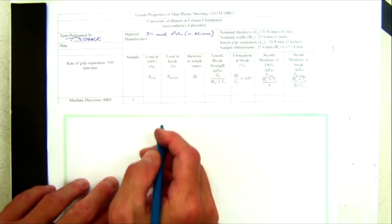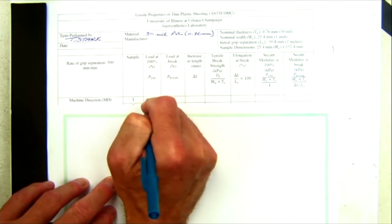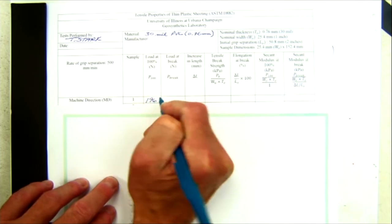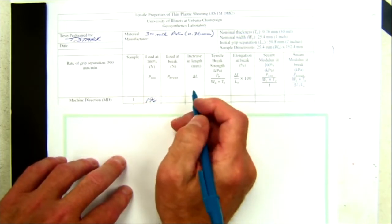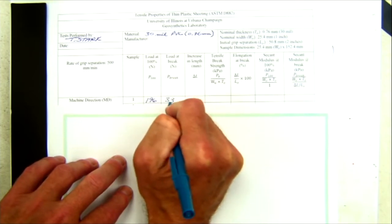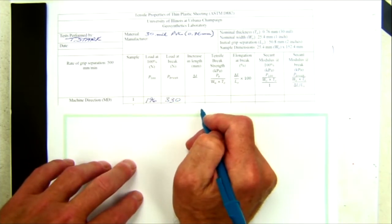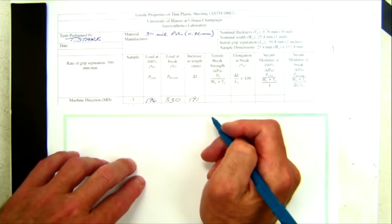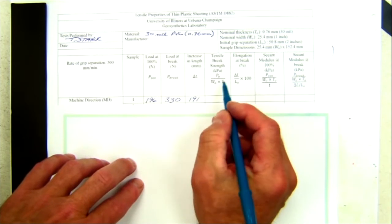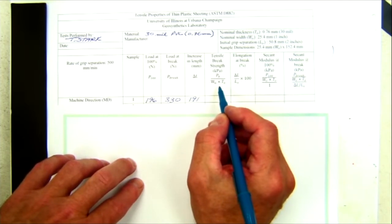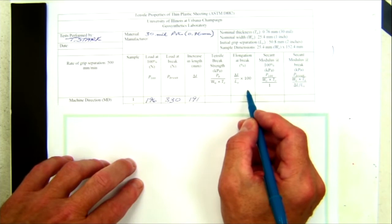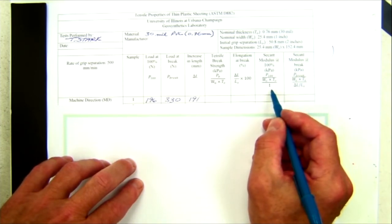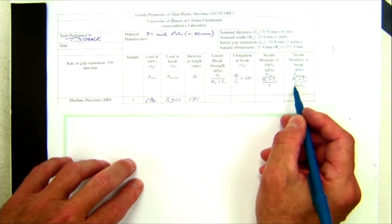I will enter the values that we measured. At 100% elongation, the load was 196 Newtons. The load at break is 330 Newtons, and the displacement at break is 191 millimeters. Now I'm going to calculate the tensile break strength, the elongation at break, the secant modulus at 100% elongation, and the secant modulus at break.